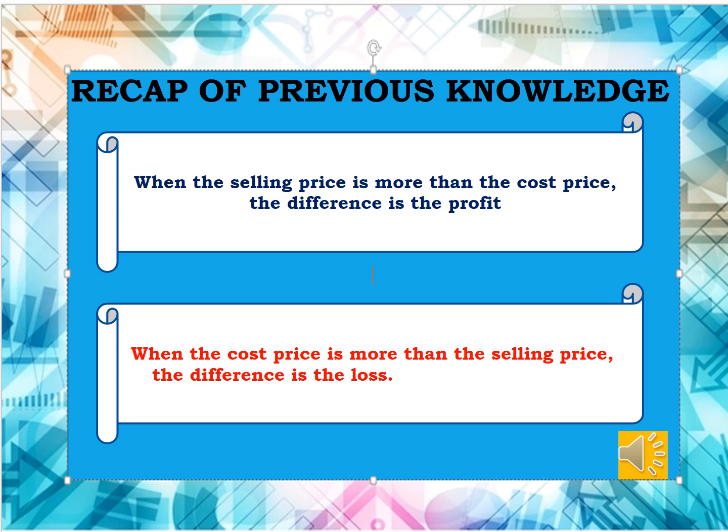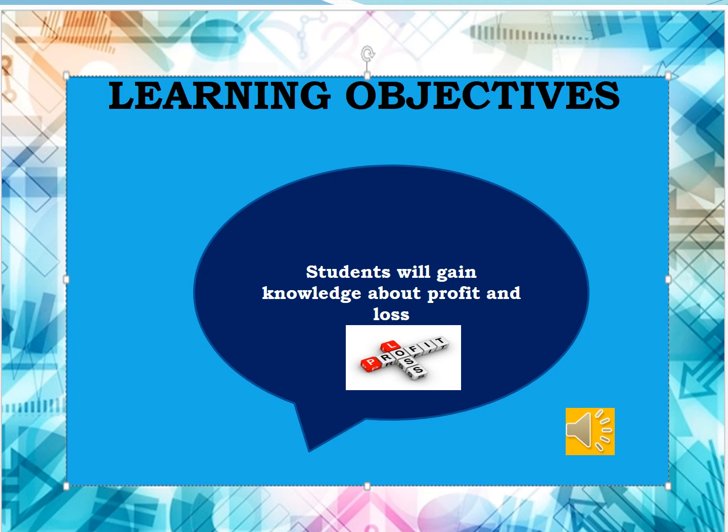We have learnt about profit and loss. When do you say it is a profit? When the selling price is more than the cost price, the difference is the profit. When the cost price is more than the selling price, the difference is the loss. Do you remember, children? In this class, you will gain knowledge about when we have a profit and when we have a loss.